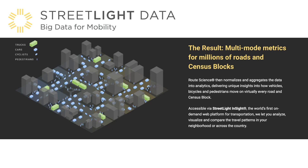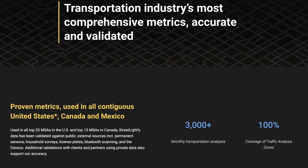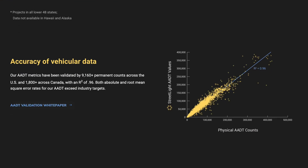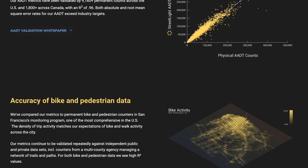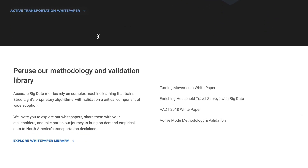The result of that process is creating a multi-mode metric for millions of roads and census blocks. They can distinguish whether a moving signal is coming from a truck, car, cyclist, or pedestrian. That information lets planners diagnose and solve complex transportation problems. They can not only know the existing travel counts on each segment of streets, but can also model and estimate complex travel patterns from one district to another.